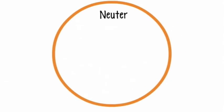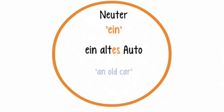In the neutral case, Ein, we have the example of Ein altes Auto, meaning 'an old car.' Here the adjective alt changes to altes: Ein altes Auto.